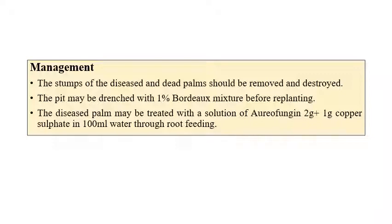For management of Basal Stem Rot, diseased or dead palms should be removed and destroyed. Pits may be drenched with one percent Bordeaux mixture before planting. Diseased palms can be treated with Areofungine — an antifungal antibiotic — at 2 grams along with 1 gram of copper sulfate in 100 ml of water, applied through root feeding. Various methods like root feeding and stem injections are covered in detail in integrated plant disease management.